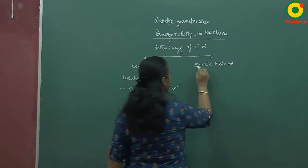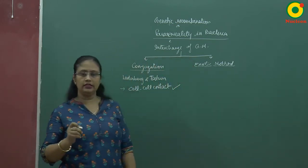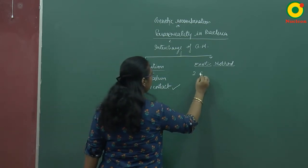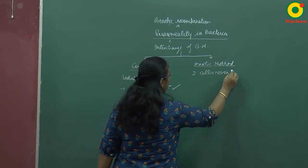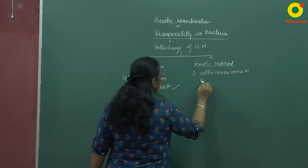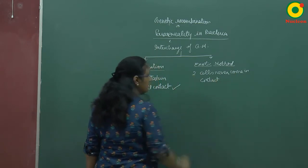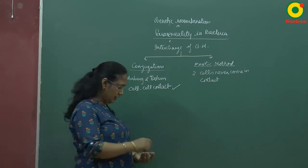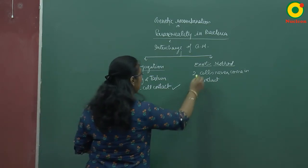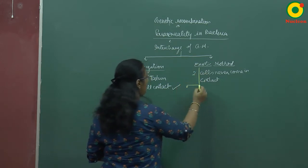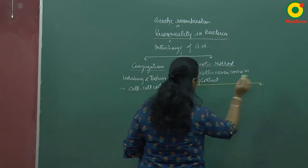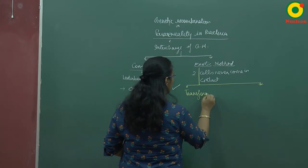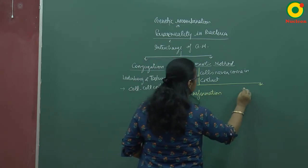In case of exotic methods, the two cells never come into contact. This is why the exotic method is again of two types: transformation and transduction.